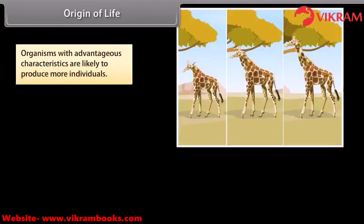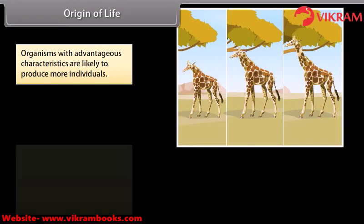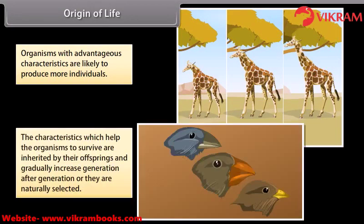Organisms with advantageous characteristics are likely to produce more individuals. The characteristics which help organisms to survive are inherited by their offspring and gradually increase generation after generation — they are naturally selected.